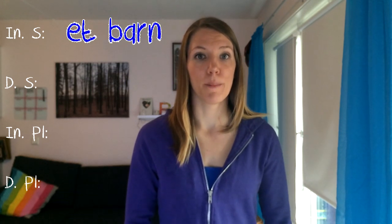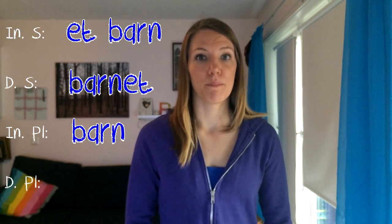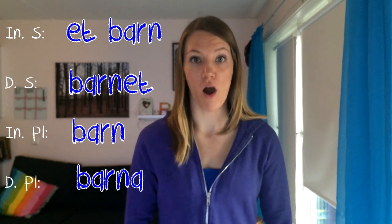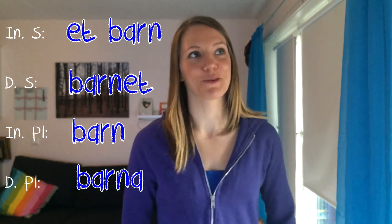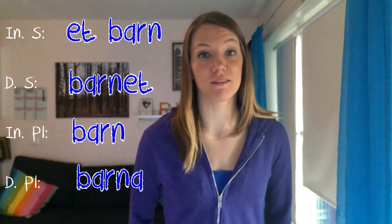There are words that have one syllable that must be finished with an 'a' in plural definite form, like a kid — et barn, barne, barn, barna. So most of the words have an 'ene' ending, but this one has an 'a' ending.